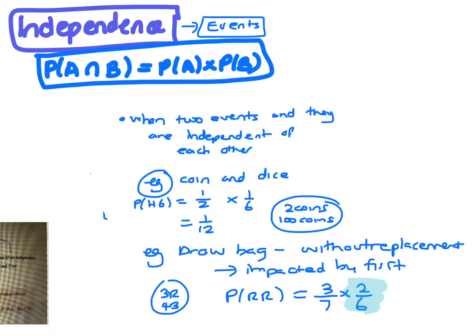If you replaced it, then it would be the same probability and not going to have an impact on each other. Now, to prove something is independent, the probability of A and B happening will be the same as multiplying the probabilities — probability of A times the probability of B.